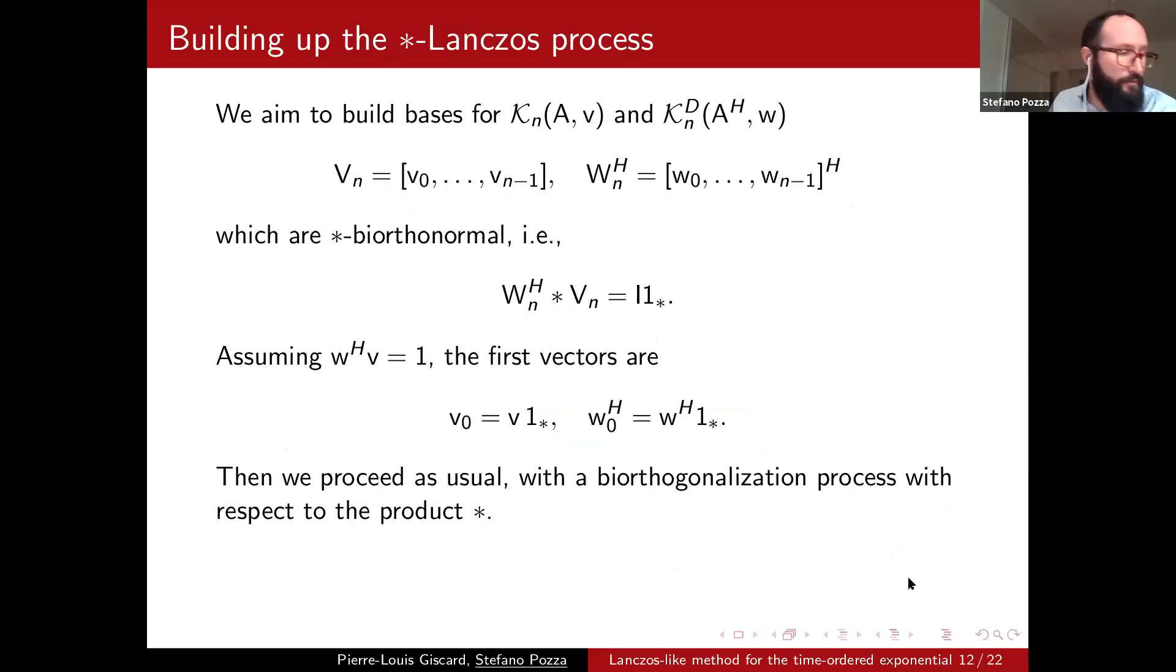And with this definition it's pretty easy to define what is a Krylov space, because then you just assume the degree of the polynomial to be smaller than n minus one. So we don't have enough time to see how to build the star-Lanczos process. So I will just show you what are the properties and the outputs of this process. So basically through this star-Lanczos process, this star-Lanczos method, you can build, if everything, if you don't have breakdown, we'll talk about it in a few minutes, you can build two bases for the two time-dependent Krylov spaces I have just introduced in the previous slide, and so that they are star bi-orthonormal. So the star product between these two vectors must be equal to the identity.